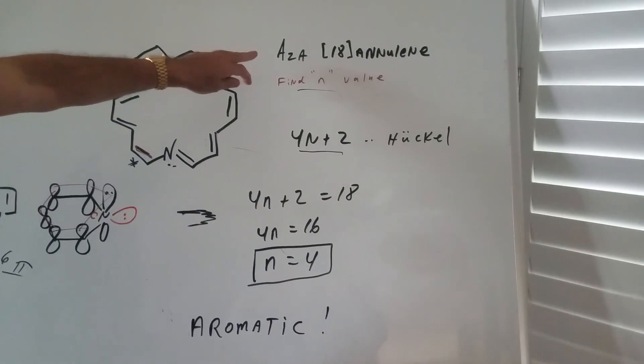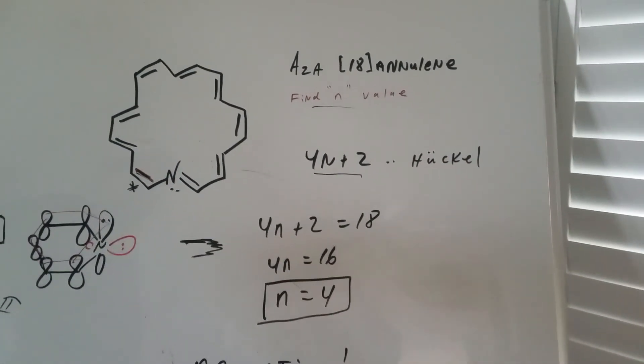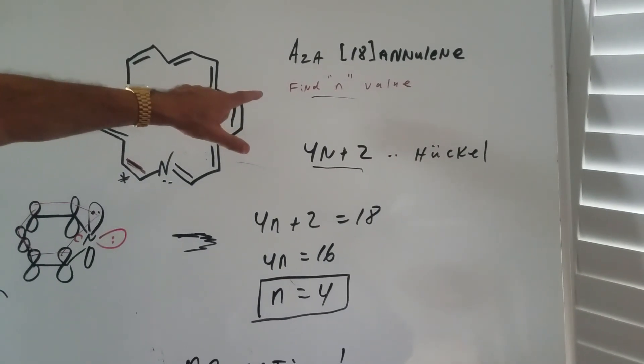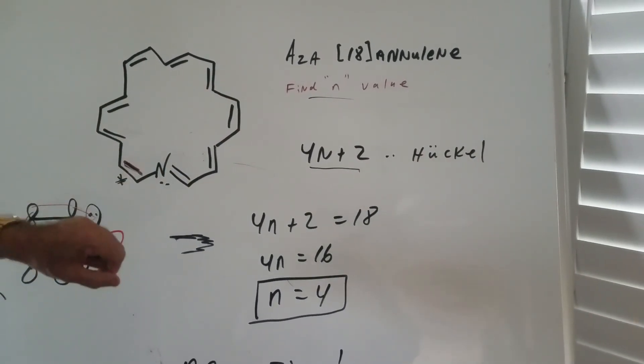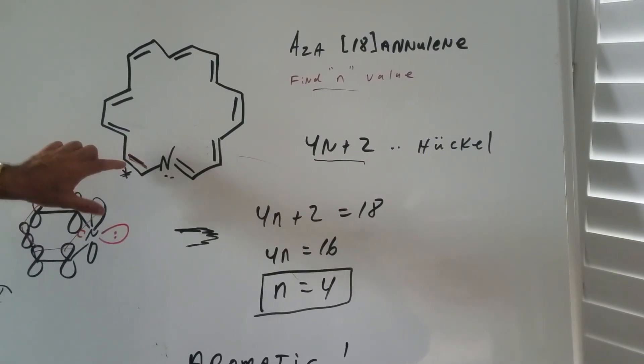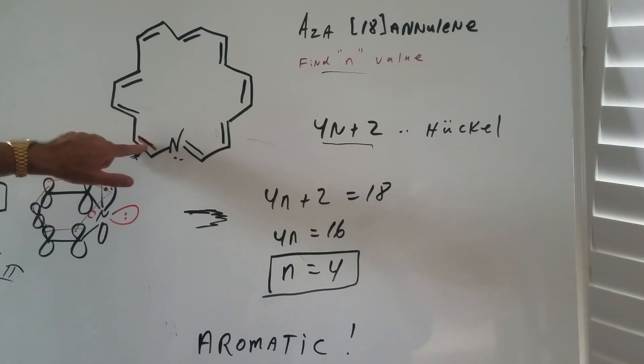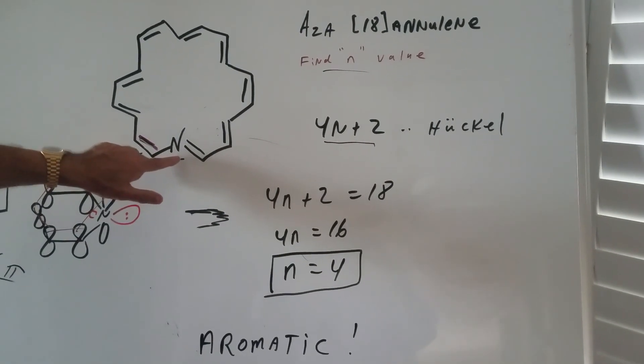Apply that to this problem. Consider aza 18 annulene and I want to find the n value. Now in order to find the n value, what we're going to do is to see how many pi electrons we have to apply Hückel's rule. So let's start here. I put it in red. Don't count the ones on the outside.